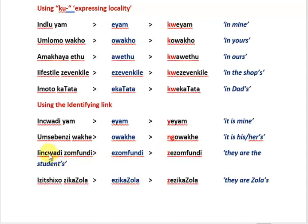'Izincwadi zomfundi' — the books of the student; 'ezomfundi' — that of the student; 'zezomfundi' — they are, or they belong to the student. 'Izitshixo zikaZola' — Zola's keys; 'ezikaZola' — those belonging to Zola; 'zezikaZola' — they belong to Zola. That concludes this video and also the pronouns as a whole. A quiz will follow.